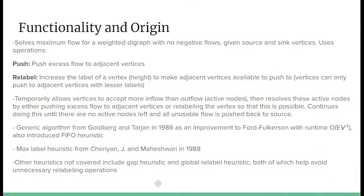This algorithm uses two main operations to solve maximum flow for a weighted directed graph with no negative flows. The first one is pushing, which pushes excess flow to adjacent vertices. The second one is relabeling, which increases the label of a vertex to make adjacent vertices available to push to. The algorithm works by temporarily allowing vertices to accept more inflow than outflow — these are called active nodes — and then resolves these active nodes one by one using push and relabel operations.